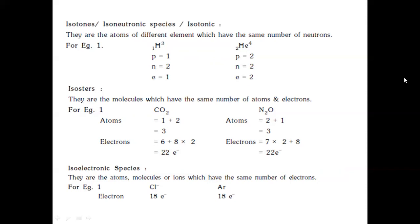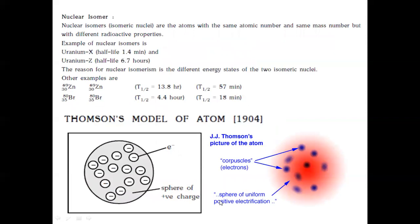Isosteres are molecules which have the same number of atoms and electrons. For example, CO₂ has 3 atoms and 22 electrons; similarly N₂O has 3 atoms and 22 electrons. Iso-electronic species are atoms, molecules, or ions which have the same number of electrons — for example, chloride ion and argon both consist of 18 electrons. Nuclear isomers, also known as isomeric nuclei, are atoms with the same atomic number and mass number but with different radioactive properties, like uranium X and uranium Z with different half-lives.